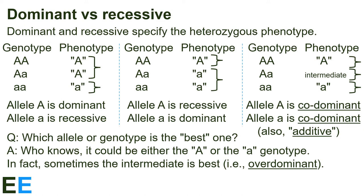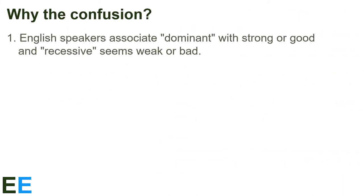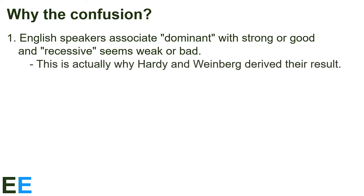This just adds to the confusion between dominant and advantageous. I wish I could go back in time and have an angry conversation with whoever decided on these terms, but that's not possible, so these are the ones we're stuck with. So why the constant confusion? First, English speakers tend to associate the word dominant with strong or good, and recessive seems weak or bad. It was a bad choice for early geneticists to choose these terms. In fact, this confusion is actually why Hardy and Weinberg derived their result back in the 1920s — they came up with Hardy-Weinberg Equilibrium to show how dominant alleles would not take over a population unless they were also advantageous. These two traits are distinct.